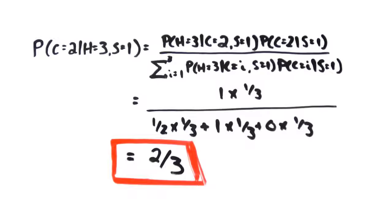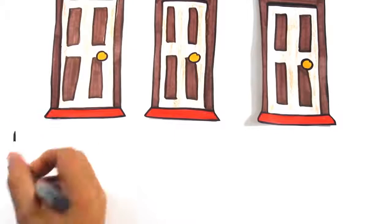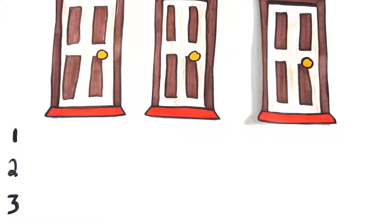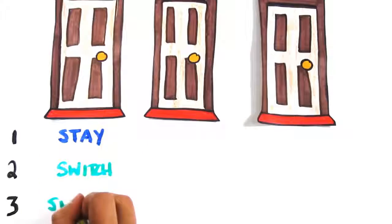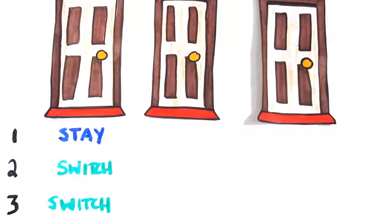Let's see it one more time using a chart. Here are all the possible scenarios. The car is behind door 1, 2 or 3, and you have the choice of each 3 doors. This means there are 9 possible outcomes. Let's tally them up quickly. If it's behind door 1 and you chose door 1, you should stay, but if you chose door 2 or 3, you should switch.